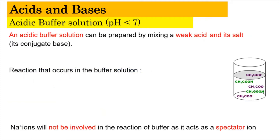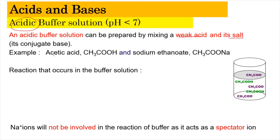For now, let's look into the acidic buffer solution, which has a pH less than 7. An acidic buffer can be prepared by mixing a weak acid and its conjugate base salt — for example, acetic acid (ethanoic acid) reacting with sodium ethanoate. When we mix CH3COOH with aqueous CH3COONa, we produce an acidic buffer.